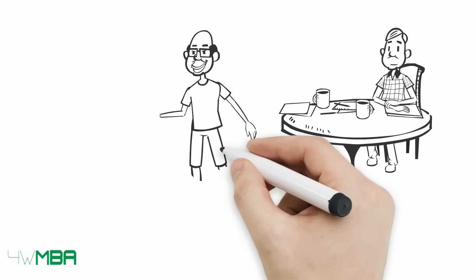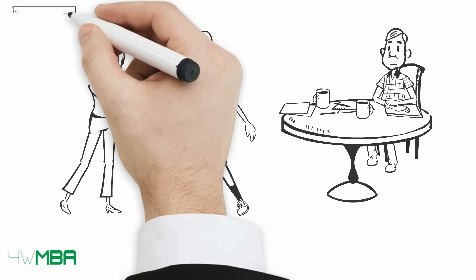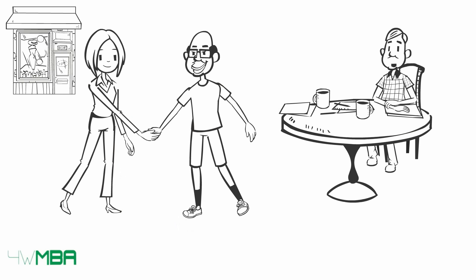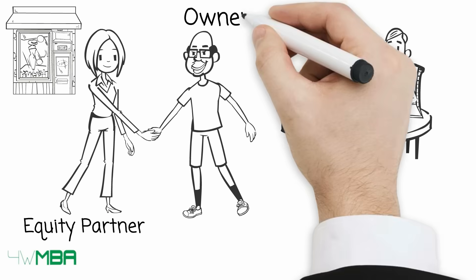After a while, Jim accepts a new partner, Jasmine. Jasmine puts 50,000 dollars and becomes an equity partner. This transaction will show on the balance sheet as owner's equity.